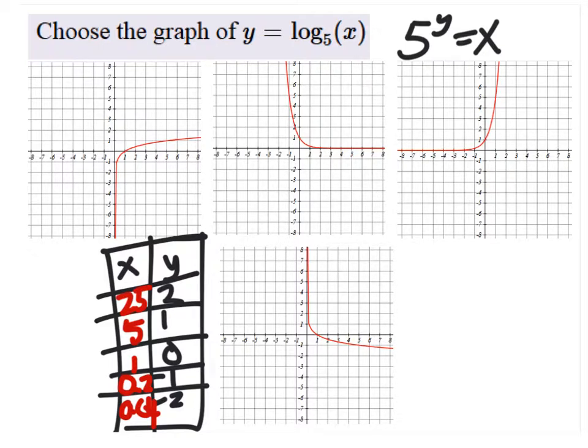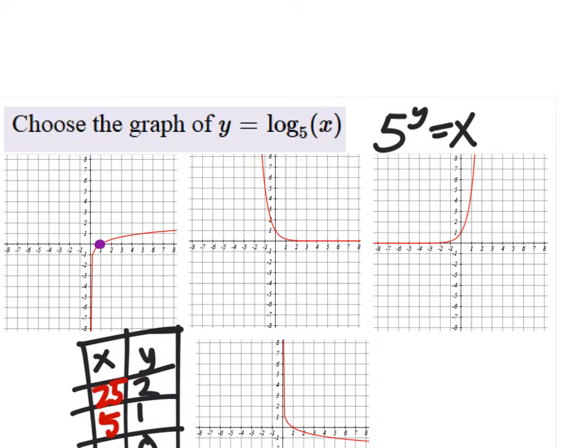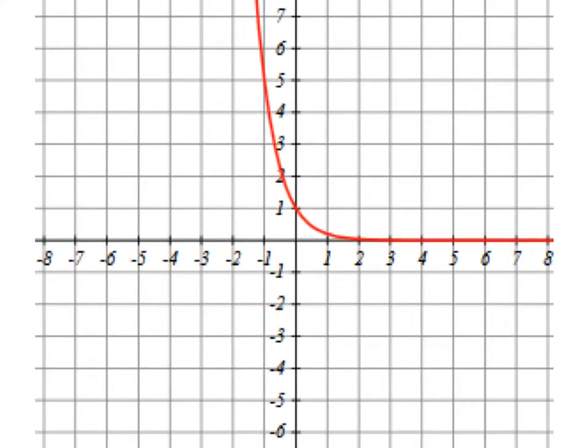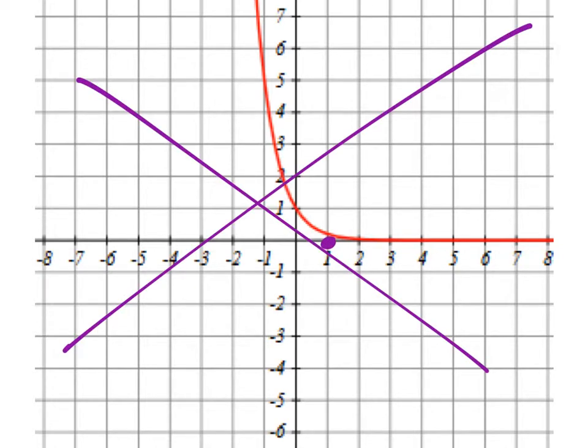So let's look at our intercept value first. 1, 0 would be this point. This line, if we look closely, doesn't exactly go through that 1, 0 point. So this one's eliminated from contention.